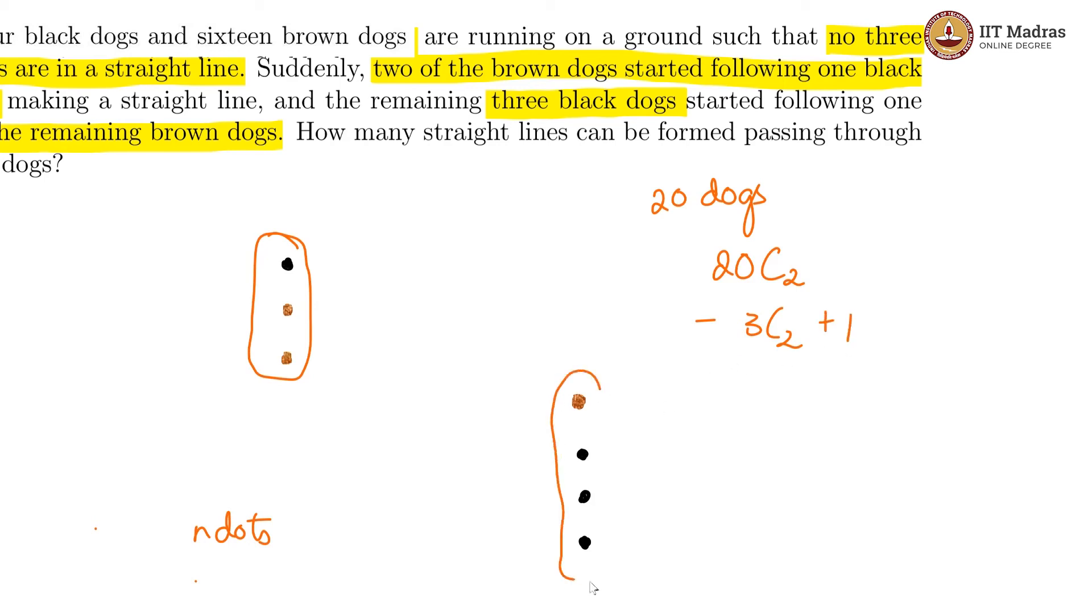And then similarly, we will subtract the lines that were supposed to come from this, which is 4C2, but we will add the one individual line that they make anyway, which is 1.